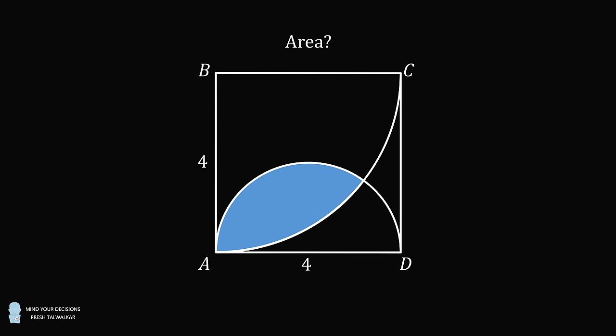This problem caused quite a stir because it was shared on social media with the tagline that it was asked in a primary school in China. But even in China, this was felt to be extremely difficult for a primary school question. From what I could tell, primary school in China could mean as high as year 6, which would be students aged 11 or 12. I want to thank Blake who suggested this problem to me — some of his calculus students in America were having trouble solving it.